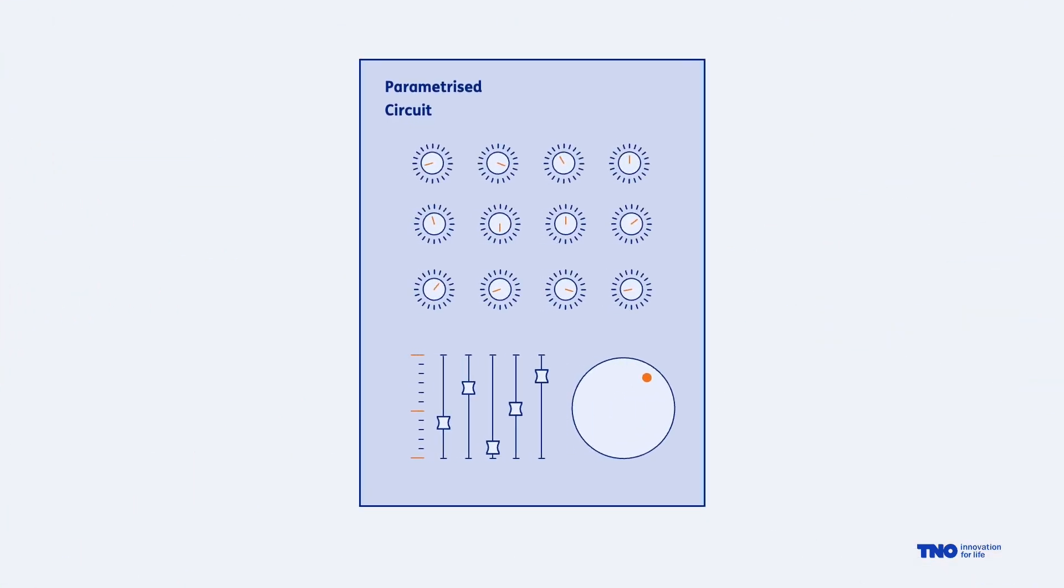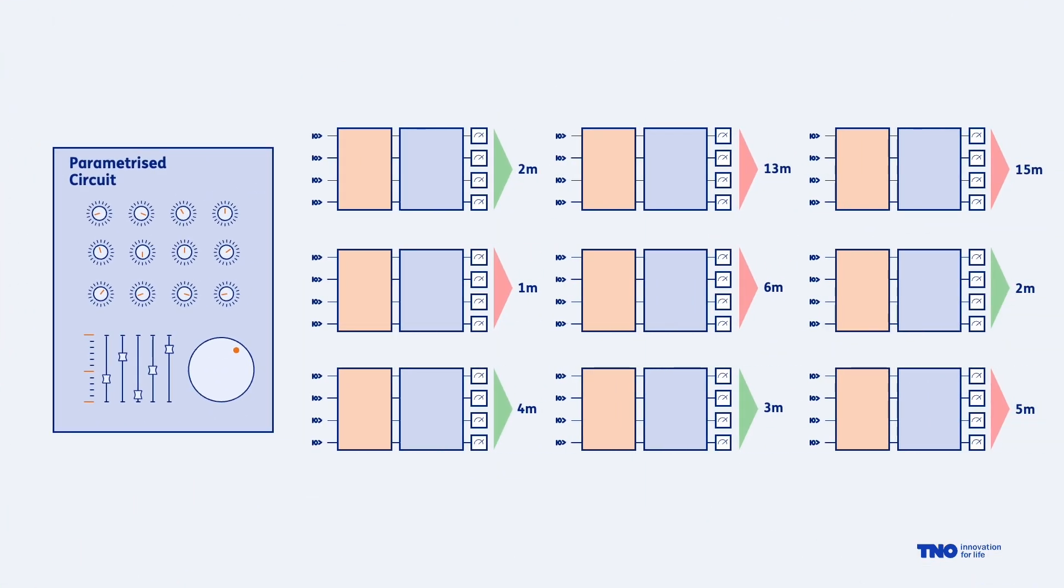So let us zoom into our blue circuit and start twisting and turning some dials to change the parameters. And then we can again check how the model performs. Did we now get more or less predictions correct? With the help of some smart classical methods to efficiently explore our options on how we can tweak the dials we keep on testing different parameter sets until we find a good set for our model.